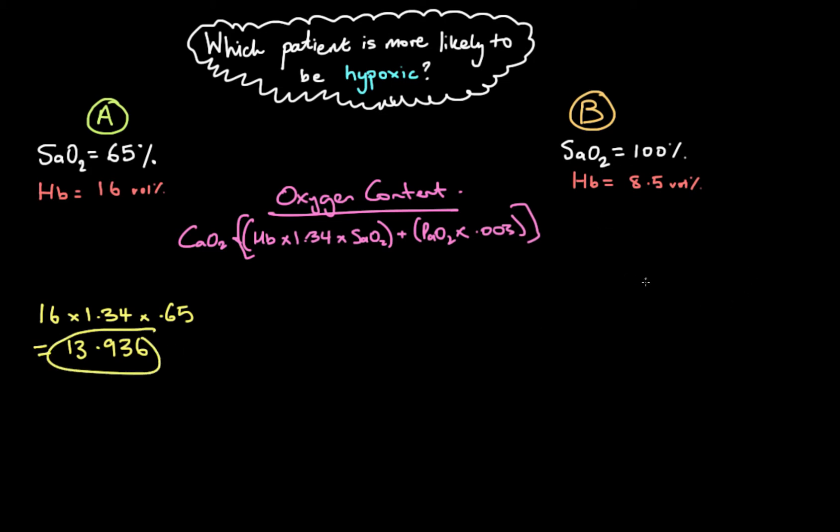Let's do patient B. His arterial oxygen saturation is 100% and his hemoglobin is 8.5 so we're going to do 8.5 grams of hemoglobin. That can carry 1.34 mils of oxygen per gram and then we're going to times that by our saturation of 100%. If you plug that into your calculator you will get 11.39 so you can see that patient A has a higher oxygen content.